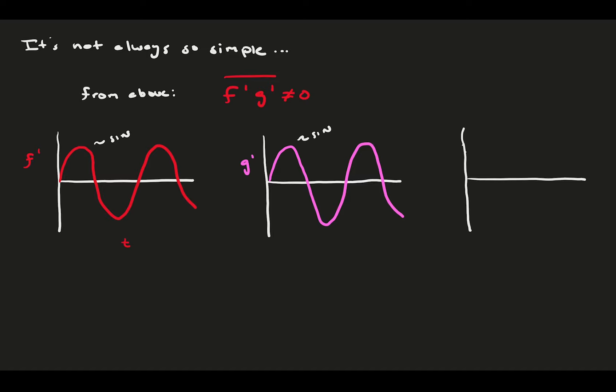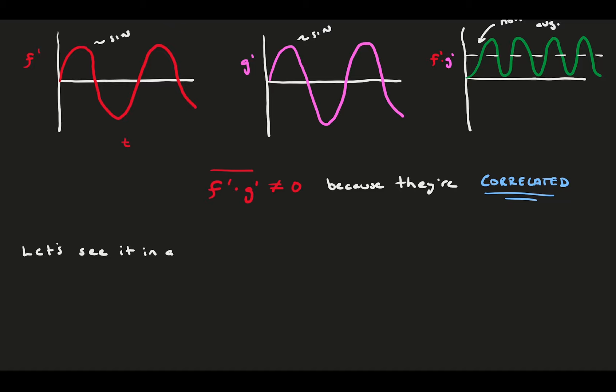But what happens if we multiply f prime and g prime? The signal is always positive, and it oscillates about some non-zero average. So, even though independently the average of f prime and g prime are zero, the average of their product is not. This is because the two signals are correlated, in this case perfectly correlated. Any amount of correlation between two fluctuating signals will make their product non-zero on average.